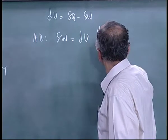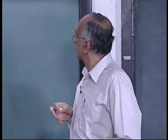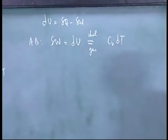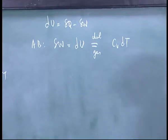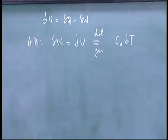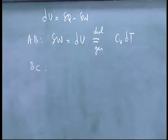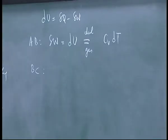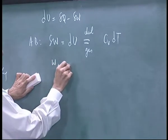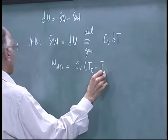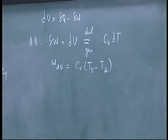Assuming ideal gas, delta W equals C_V dT. So W_AB equals C_V times (T_B minus T_A). If C_V is constant you use an average value; strictly it is a function of temperature, but for engineering purposes we use an average value of C_V. There are also thermodynamic charts you can use without assuming ideal gas.